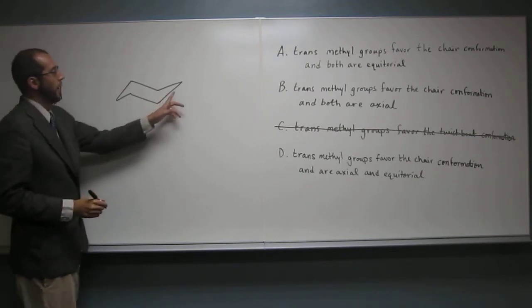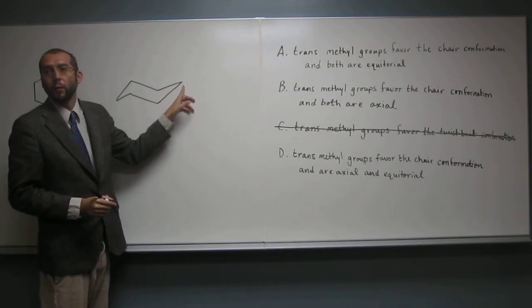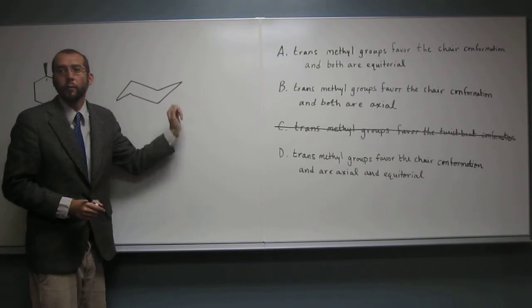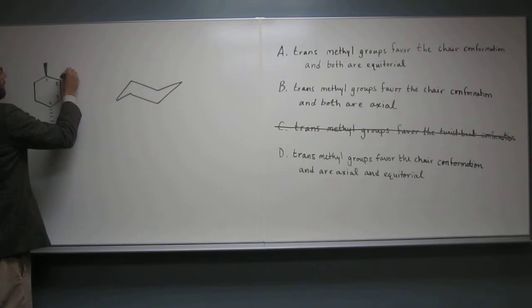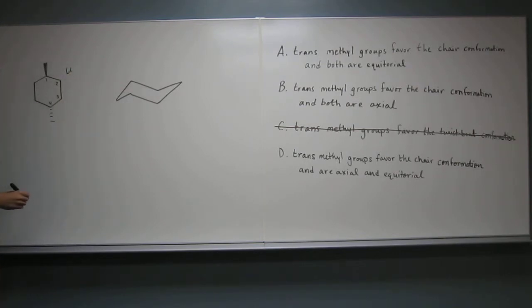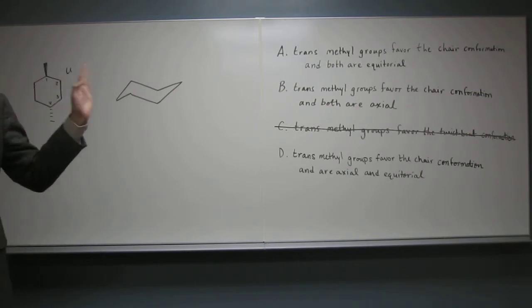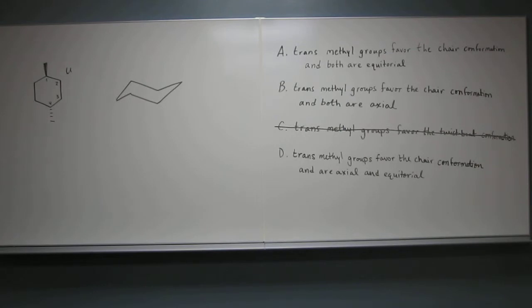So remember, the chair kind of looks like that off-kilter bow tie, right? And we're going to label these atoms, we'll just say 1, 2, 3, 4, like that. And remember, we like to start, at least what I've taught you, with 1 being here. We have these two descriptors, like up-axial, up-equatorial, or down-axial, down-equatorial. And that's what we're trying to figure out here.